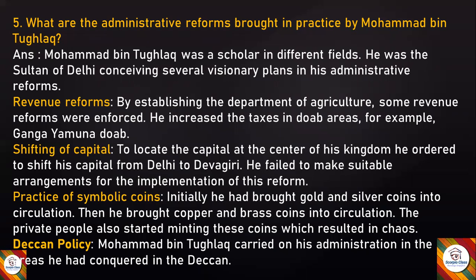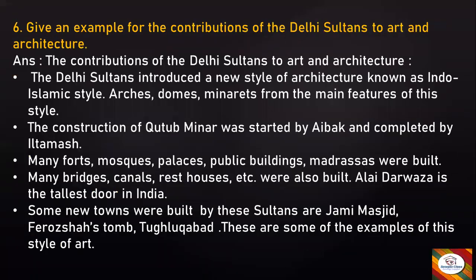Next question: Give an example of the contributions of the Delhi Sultans to art and architecture. Answer: The Delhi Sultans introduced a new style of architecture known as the Indo-Islamic style. Arches, domes, and minarets are the main features of this style. The construction of Qutub Minar was started by Aibak and completed by Iltutmish.